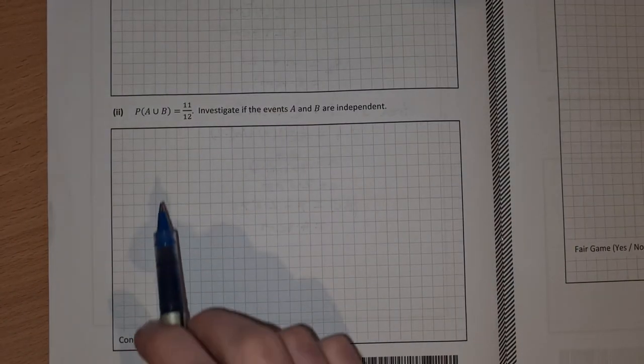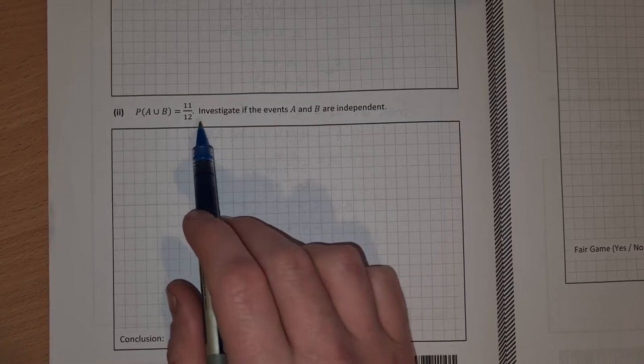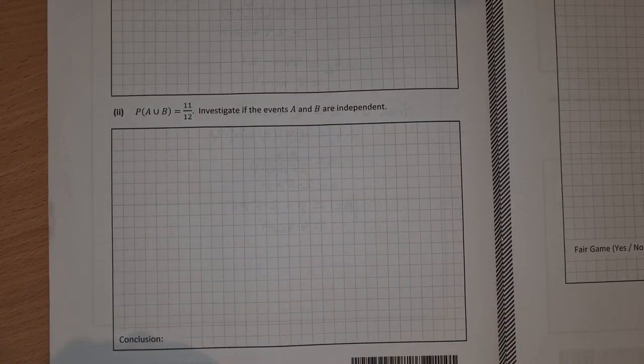So on to part B then. The probability of A union B is equal to 11 over 12. Investigate if the events A and B are independent.